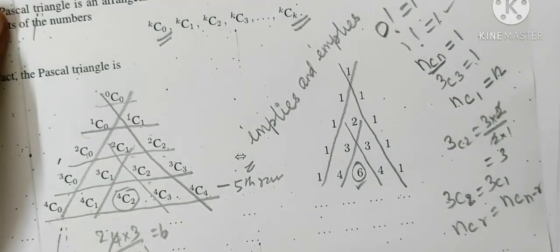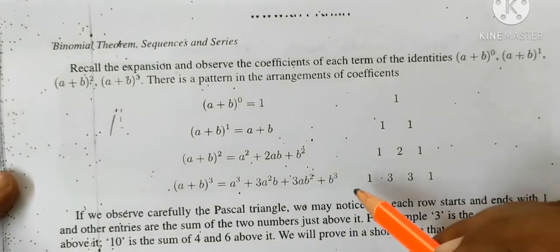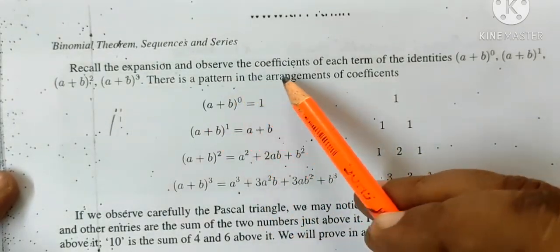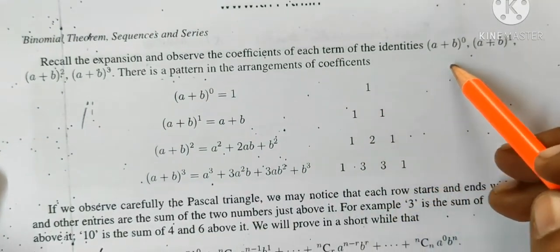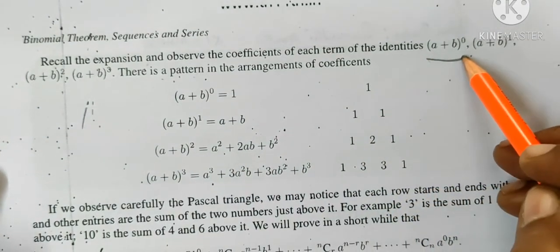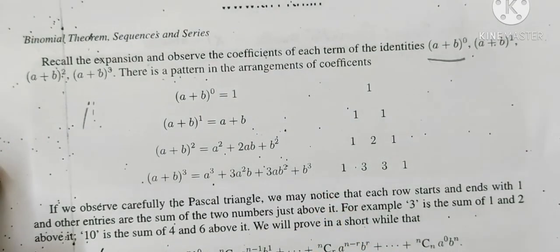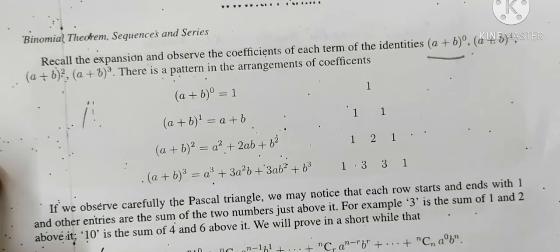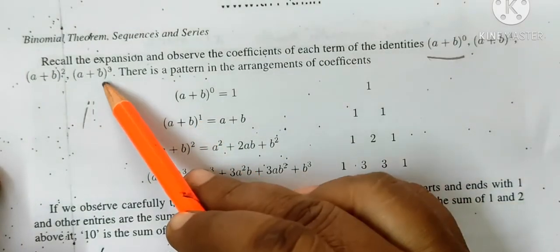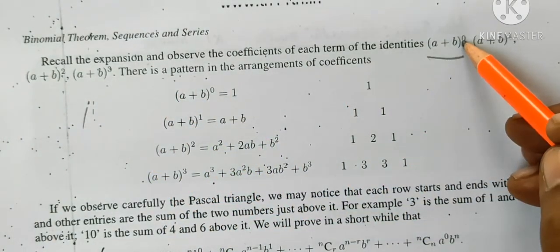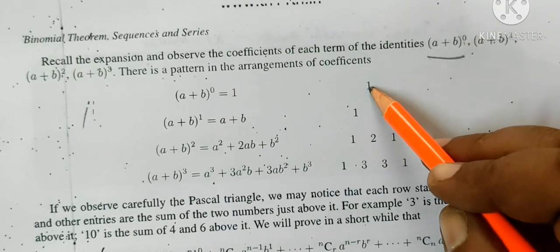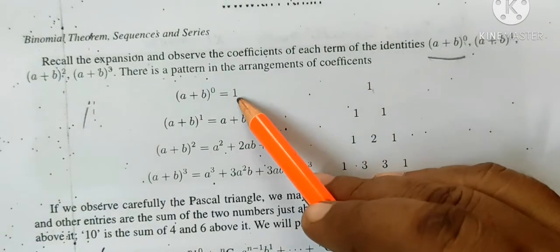We call the expansion and observe the coefficient of each term of identity: a plus b whole power zero, a plus b whole power one, then a plus b whole square, then a plus b whole cube. We know anything power zero is one.